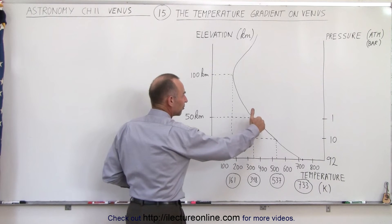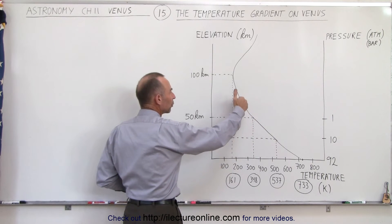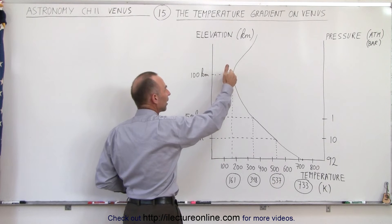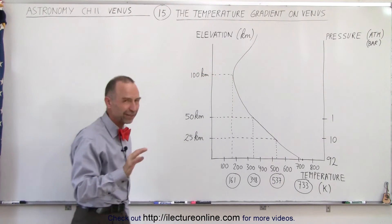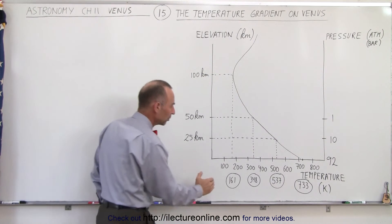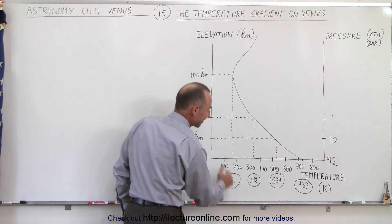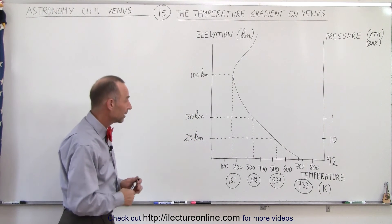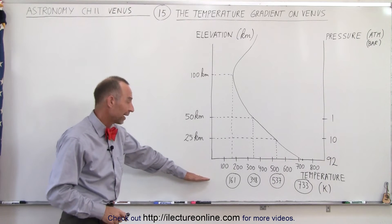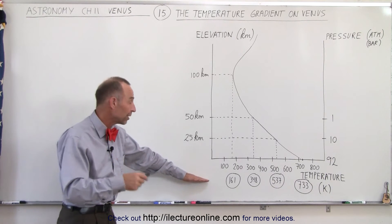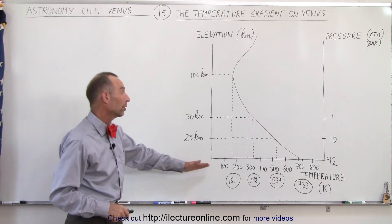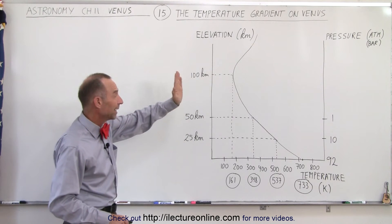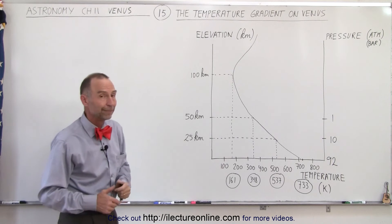Then as you continue to go up, it continues to get colder and colder and colder, and you finally reach a height of 100 kilometers — about 64 miles up — when the temperature drops to 161 Kelvin. This is well below the freezing point of water; in fact, it's more than 100 centigrade degrees below the freezing point of water. So by the time you reach a height of 100 kilometers, about 64 miles up, it gets very, very cold up there.